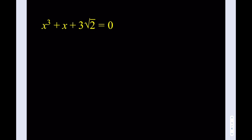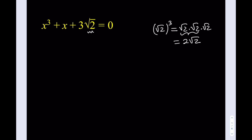I'm going to manipulate this equation in such a way that I can get both the x and the x cubed. If you consider square root of 2 and cube it — what is square root of 2 cubed? It is square root of 2 times square root of 2 times square root of 2. That equals 2 times the square root of 2. How does that observation help me solve this problem?